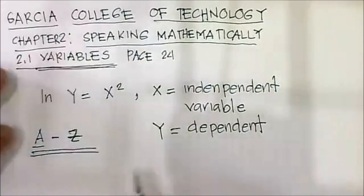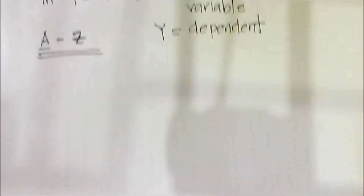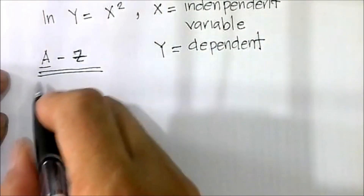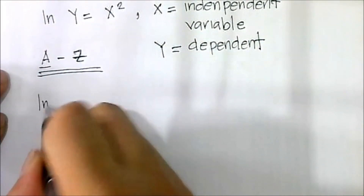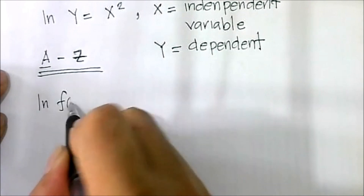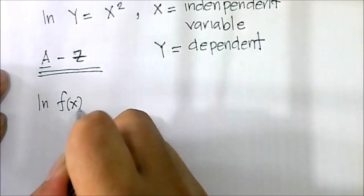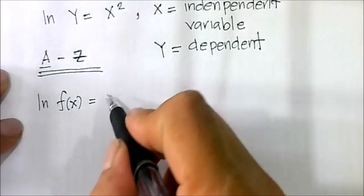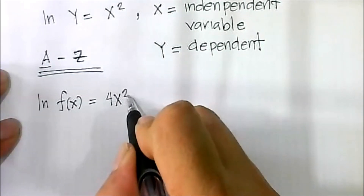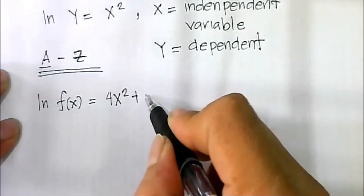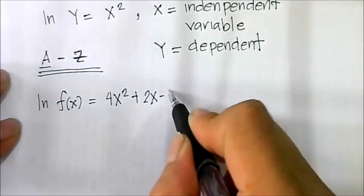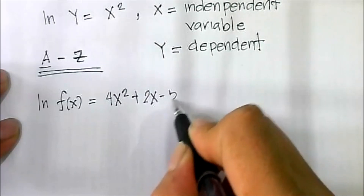For example, we have a given function: f(x) equals 4x squared plus 2x minus 5.